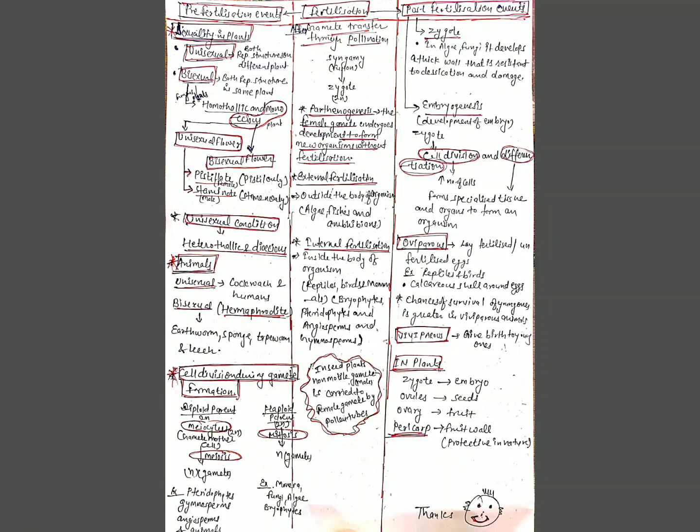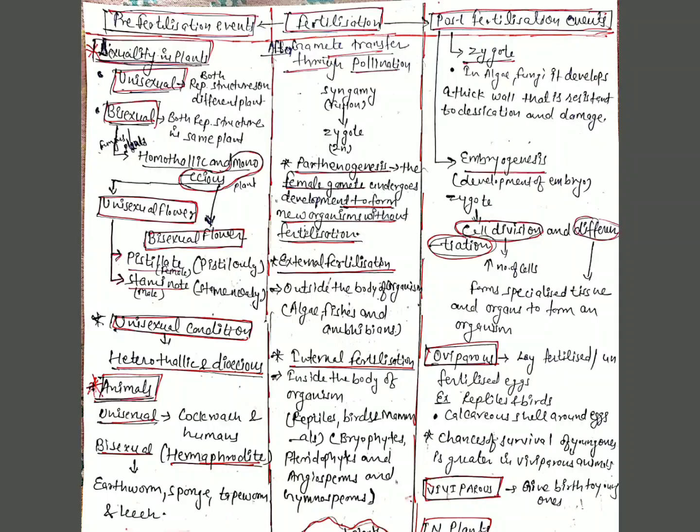When both types of gametes are brought together for fusion, this process is known as syngamy and a diploid zygote is formed. Sometimes the female gamete undergoes development to form a new organism without fertilization — this is known as parthenogenesis. Examples include rotifers, honeybees, and even some lizards and birds such as turkey.